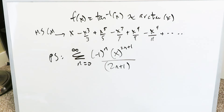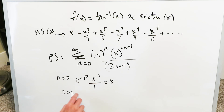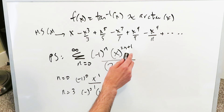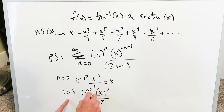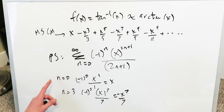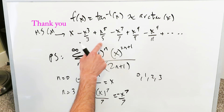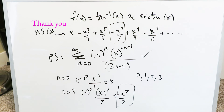You can check two terms. If N equals 0: minus 1 to the power of 0 times x to the power of 1 divided by 1, giving x. If N equals 3: minus 1 to the power of 3 times x to the power of 2 times 3 plus 1, which is x to the 7, divided by 7, giving minus x to the 7 over 7. That's exactly the 4th term of the series. Once we confirm this is a good power series, we've completed the expansion.